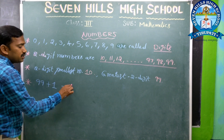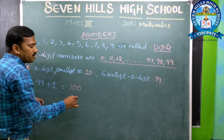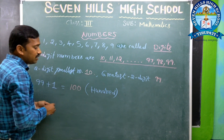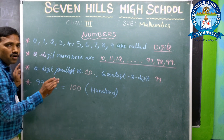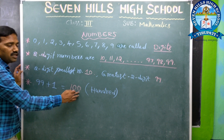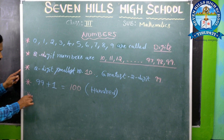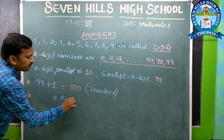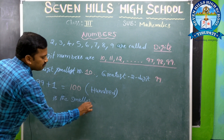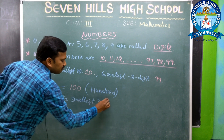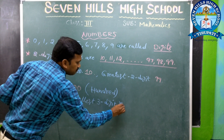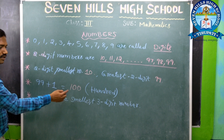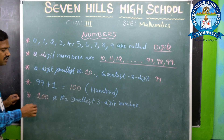99 is the greatest 2-digit number. The smallest 3-digit number is 100. 100 is the smallest 3-digit number.